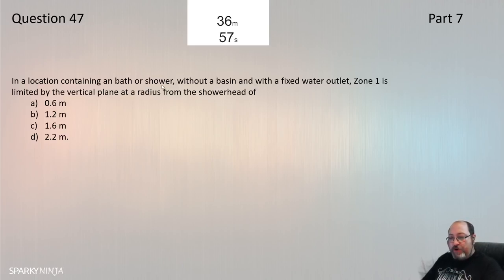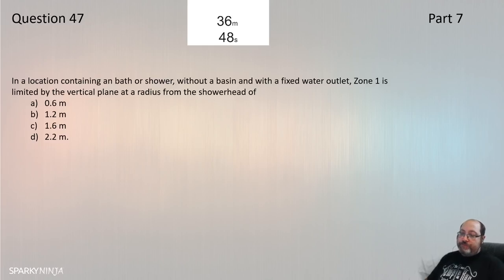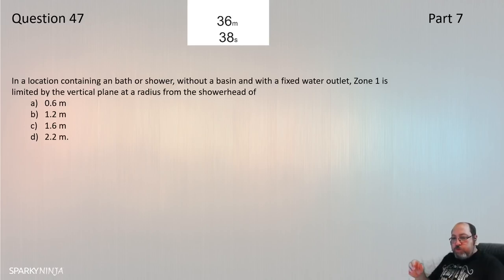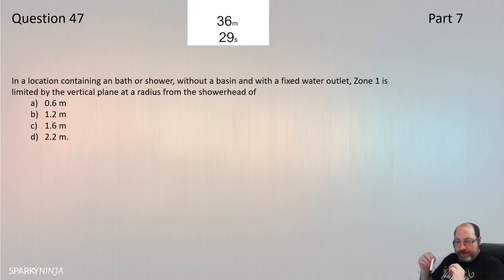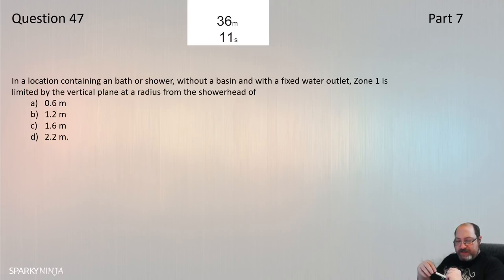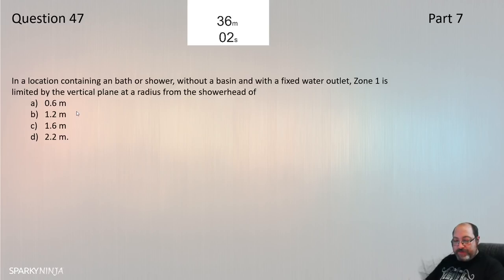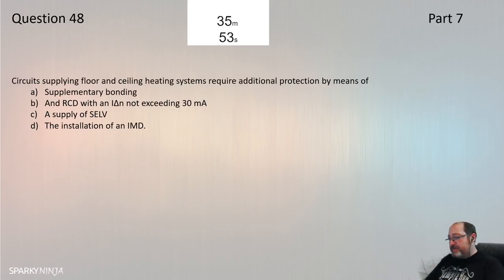Question 47: Bath or shower — regulation 701. This is about the scribing of zones. Zone 1 is limited by the vertical plane at a radius from the shower head; the distance from the centre point of the fixed outlet is 1.2 metres. Question 47 is B, from 701.32.3.